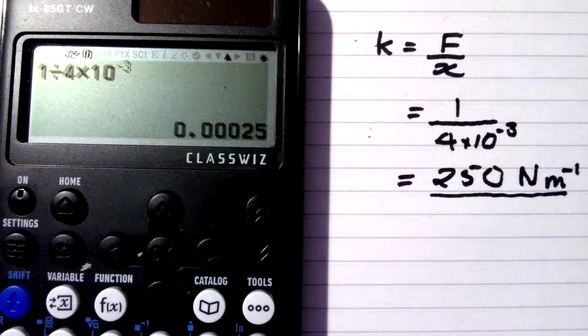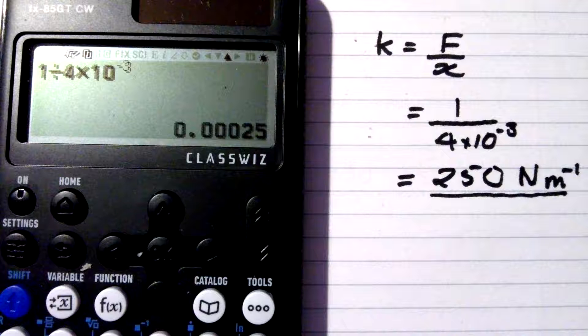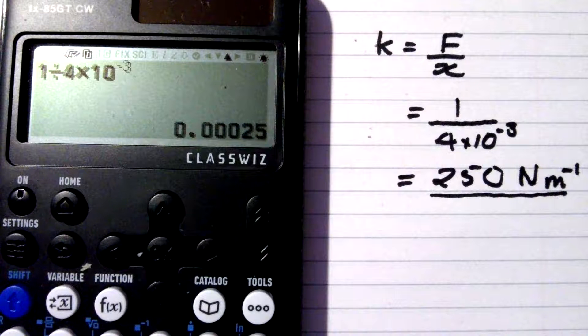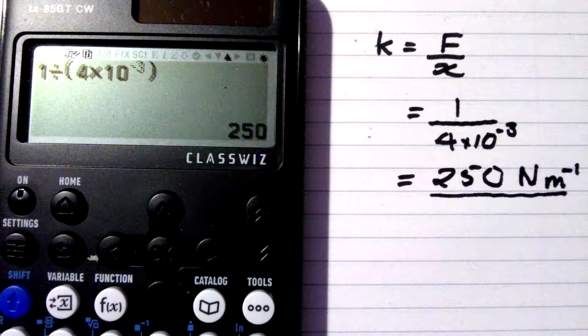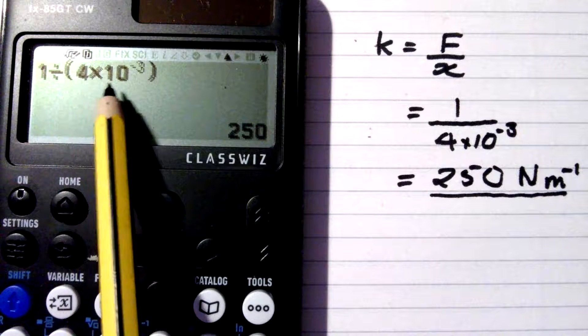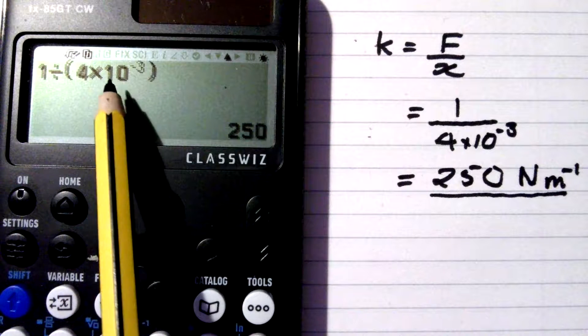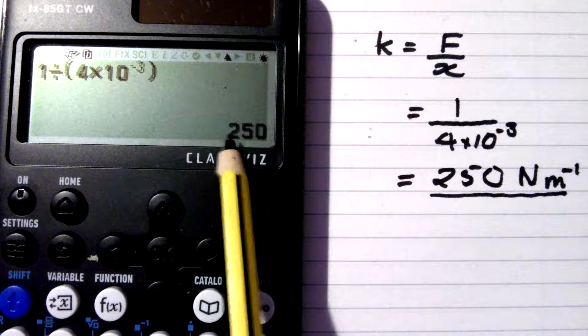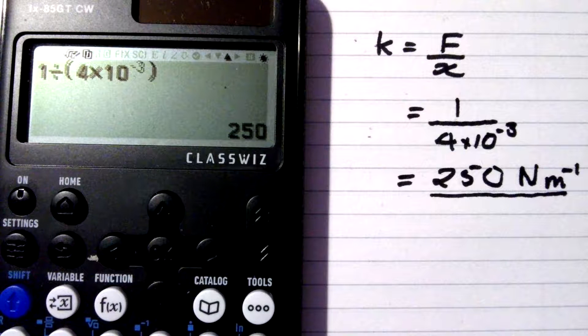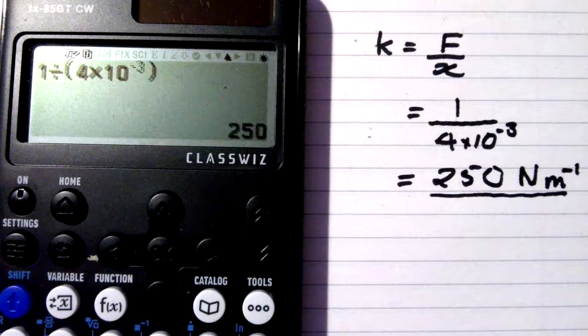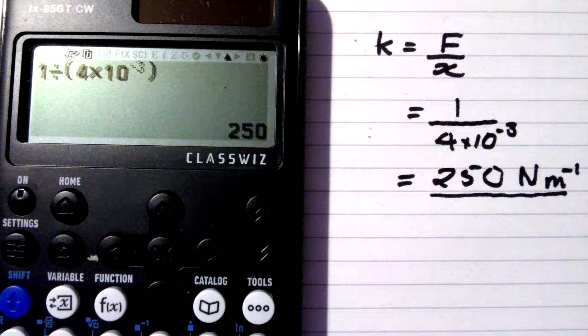Now, there are a couple of workarounds, so let's have a look at those. Here's the first workaround. If I put the 4 times 10 to the negative 3 in brackets, it gives me the correct answer. The old calculators put those brackets in automatically.